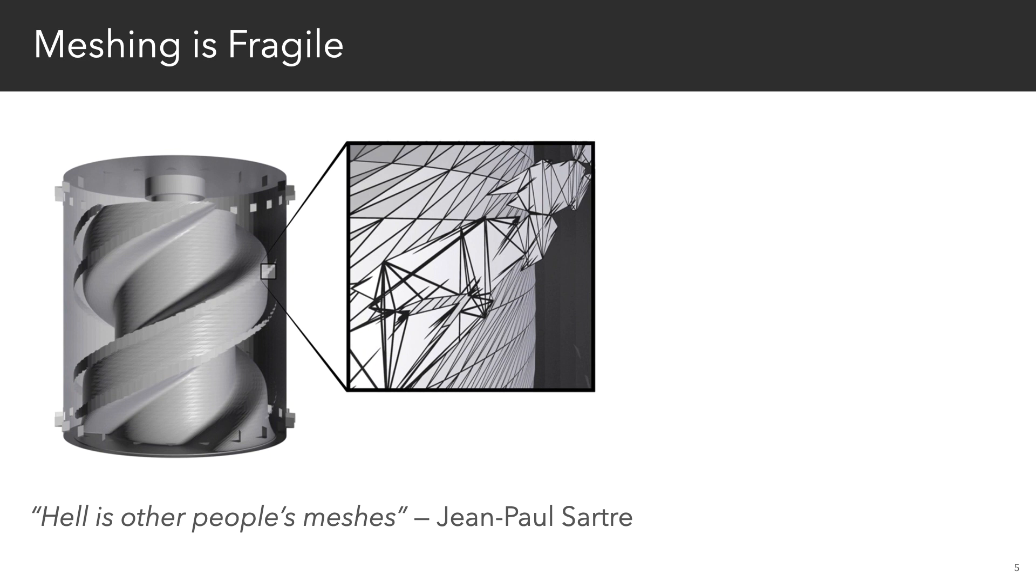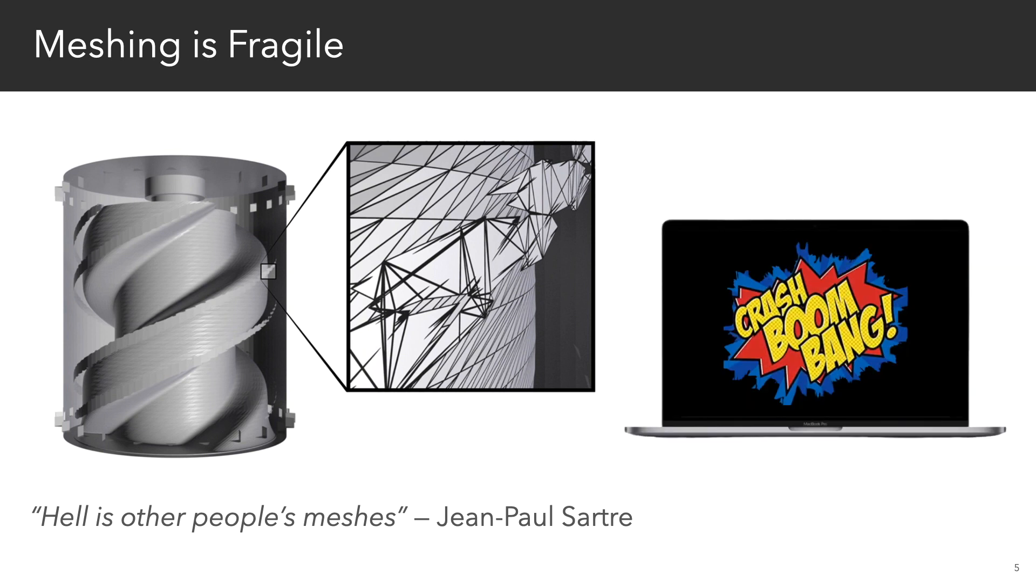So real-world geometric data has defects that makes it really hard to mesh. And meshing itself is quite delicate, because just a few bad quality elements can cause robustness problems for downstream applications.